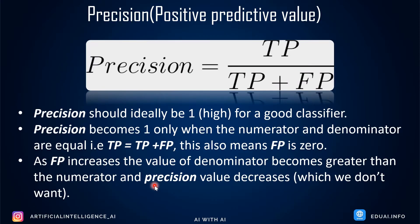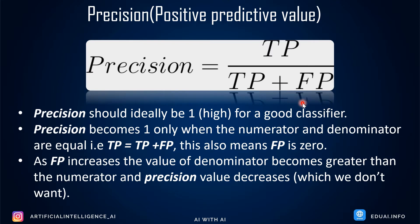Now let's calculate precision — also called positive predictive value. The formula is: Precision = True Positives / (True Positives + False Positives). Ideally, if false positives = 0, precision = 1. But that won't happen in real scenarios. As false positive value increases, precision decreases — which we definitely don't want.